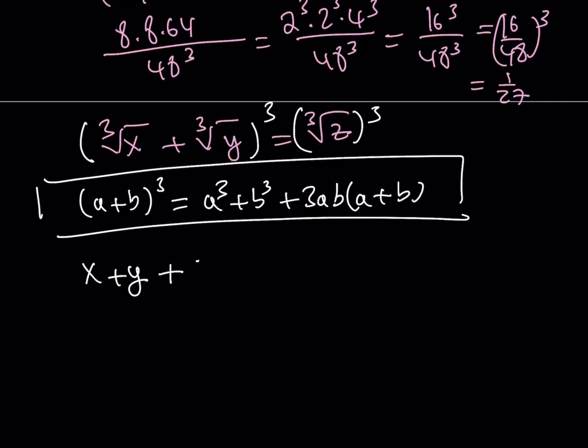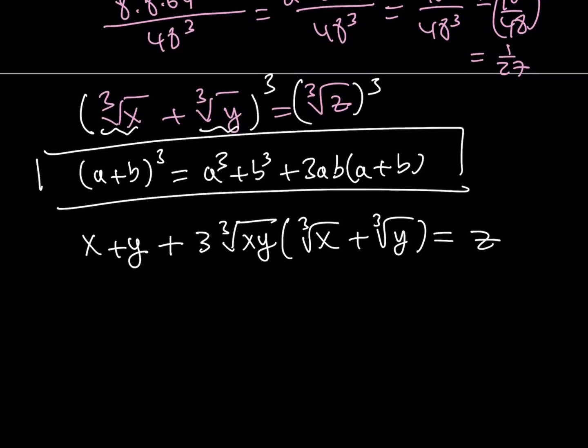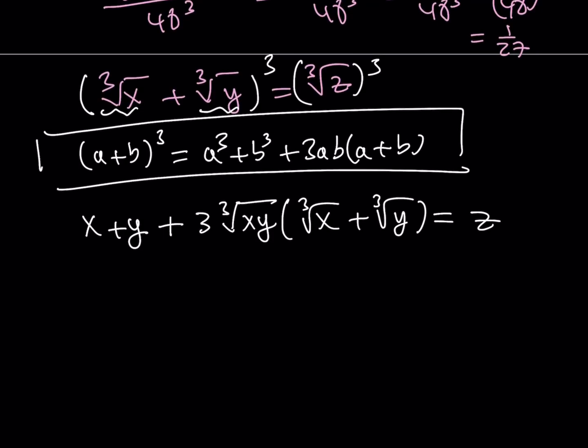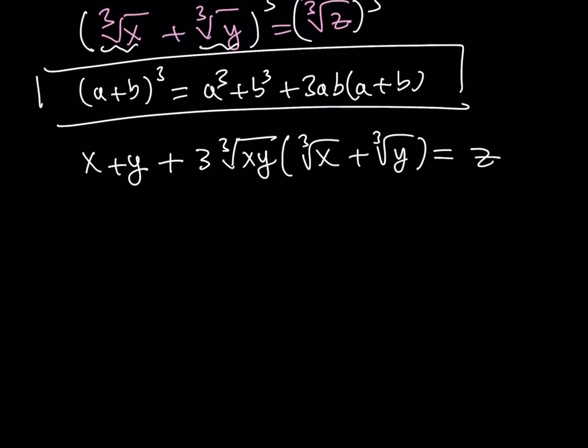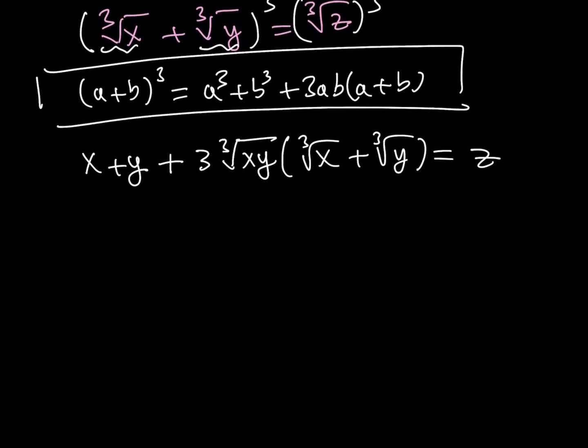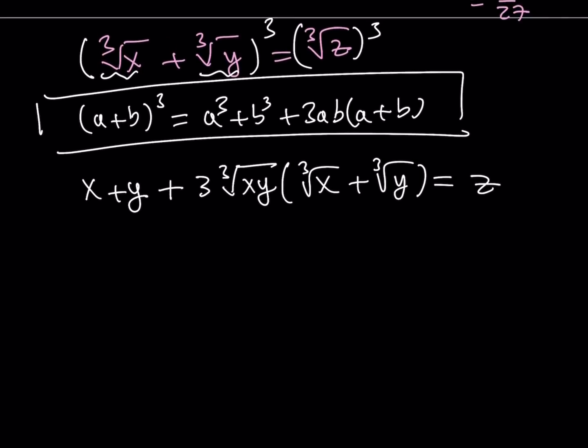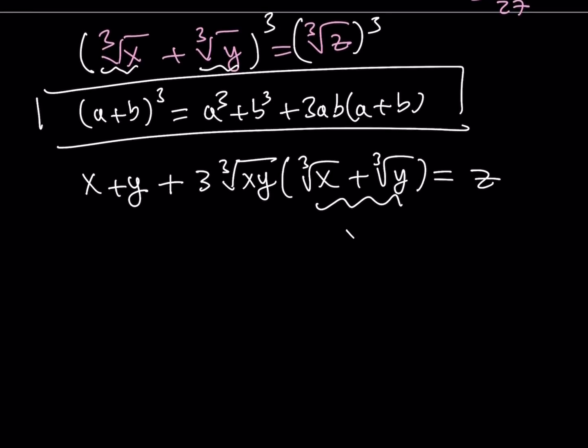And then plus 3 times ab, so this is my a and that's my b, that is going to be the cube root of xy, which is basically the product, multiplied by the sum, which is the cube root of x plus the cube root of y. And the cube root of z cubed is just going to equal z here. And we don't really need to worry about the numbers being negative or positive, because the cube root of any real number is well-defined. So here, notice that this expression right here is equivalent to cube root of z. Great.